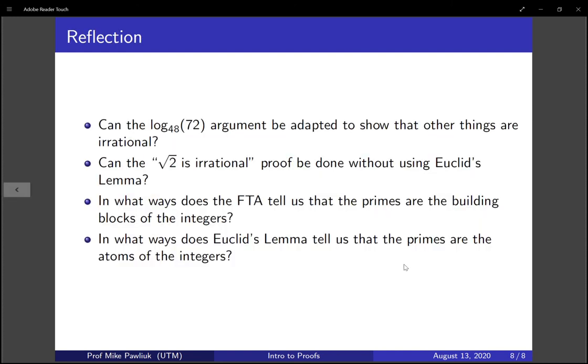Let's take a moment to reflect. Can the argument we just saw be adapted to show that other things are irrational? Can the square root of 2 is irrational proof be done without using Euclid's lemma? In what ways does the fundamental theorem of arithmetic tell us that the primes are the building blocks of the integers? In what ways does Euclid's lemma tell us that the primes are the atoms of the integers?